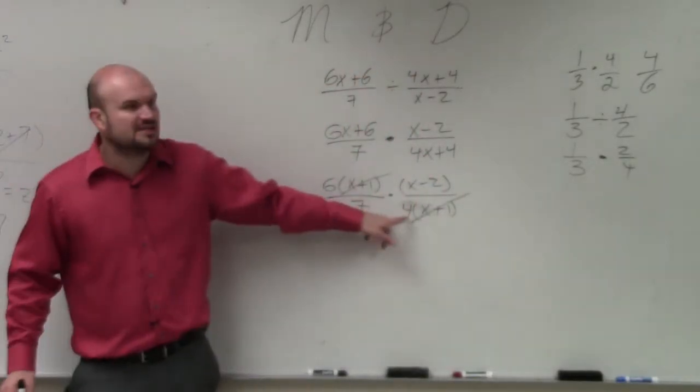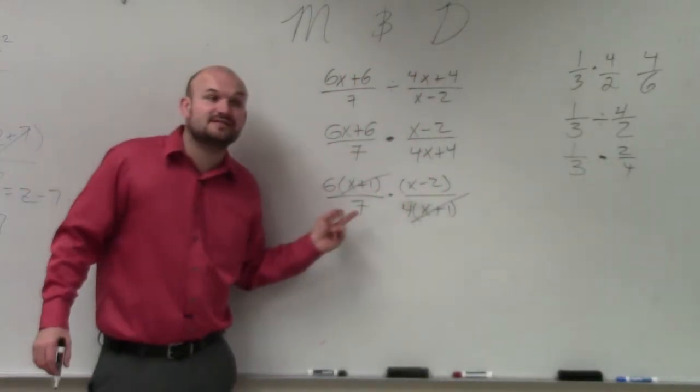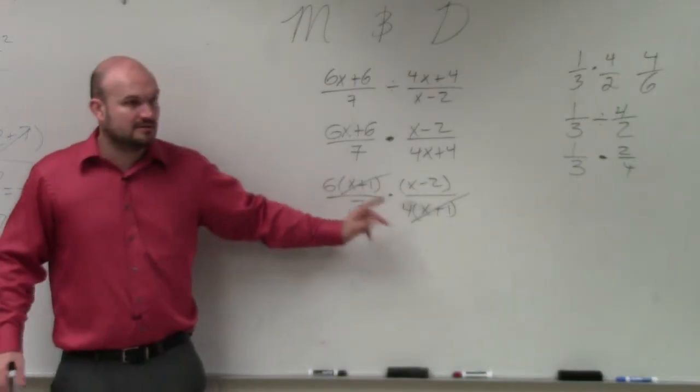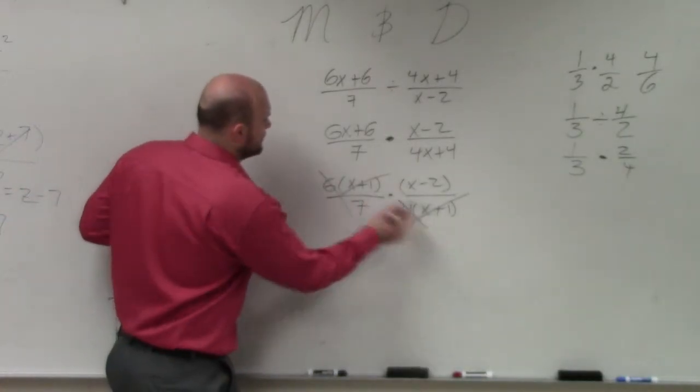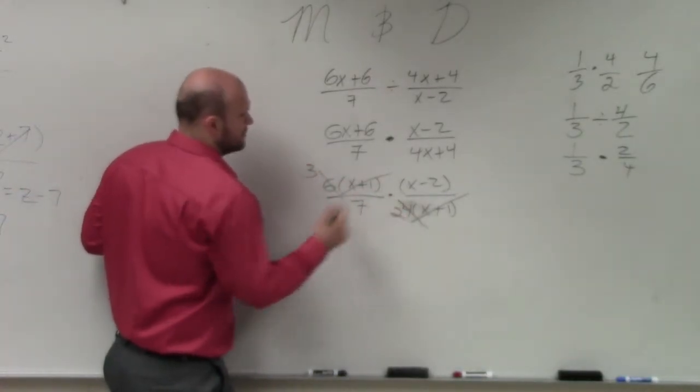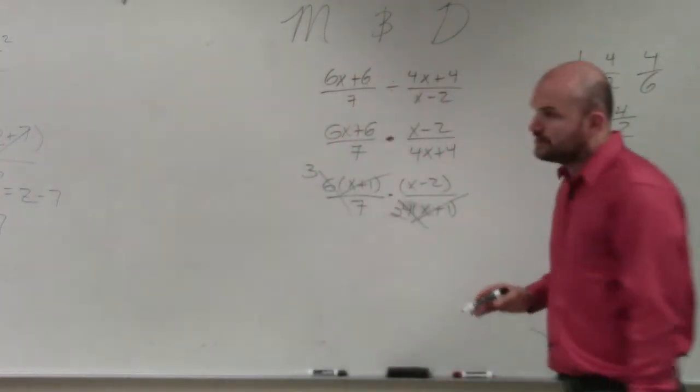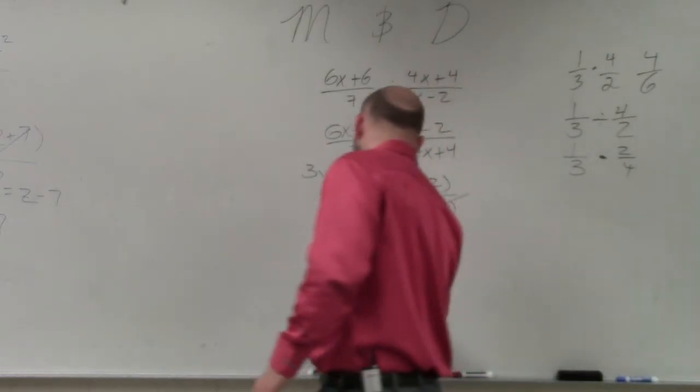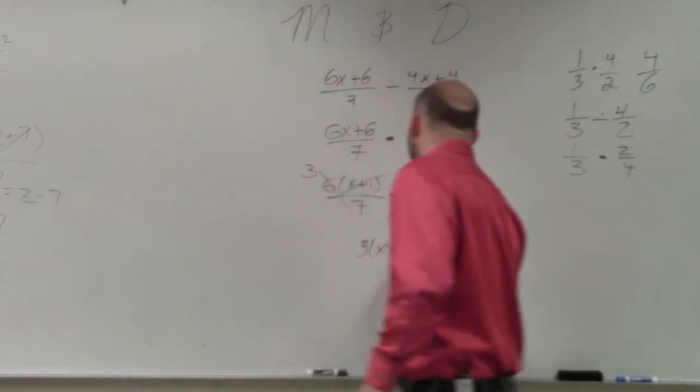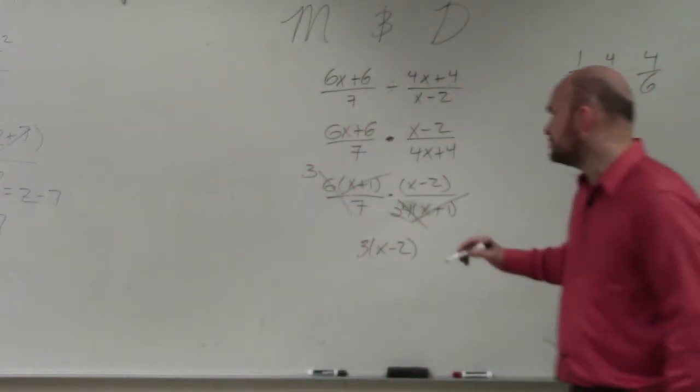And then can I reduce 6/4? Because 4 doesn't divide into 6 evenly, but can I reduce that? Yeah. To? Three halves. So now, what I have left is 3 over (x - 2), and then I have 7 times 2, which is 14.